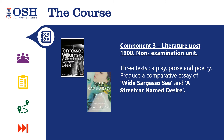Component 3 is literature post-1900, and you'll be looking at three texts — a play, prose, and poetry. You'll study Carol Ann Duffy's Rapture, Tennessee Williams' A Streetcar Named Desire, and Jean Rhys' Wide Sargasso Sea, which is a feminist response to Jane Eyre by Charlotte Brontë. It will be useful to have some understanding of each text, but you'll be looking at most of these in Year 13, so it's not an immediate priority.